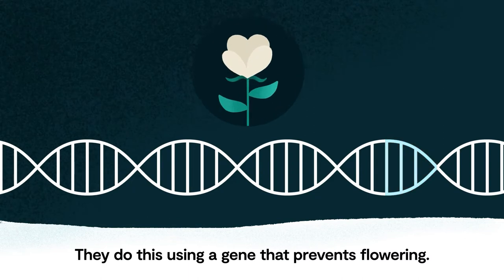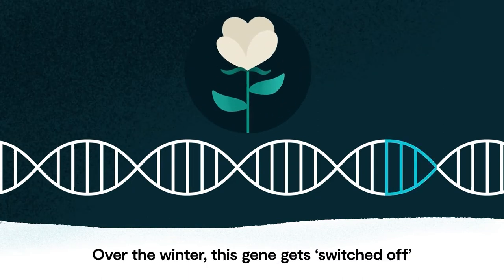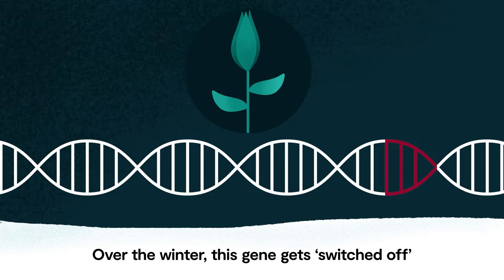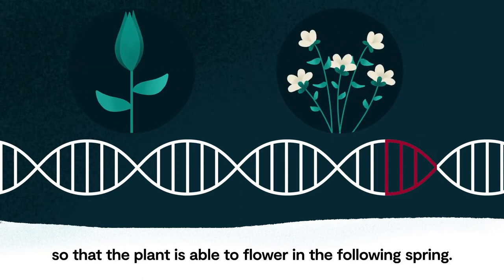They do this using a gene that prevents flowering. Over the winter this gene gets switched off so that the plant is able to flower in the following spring.